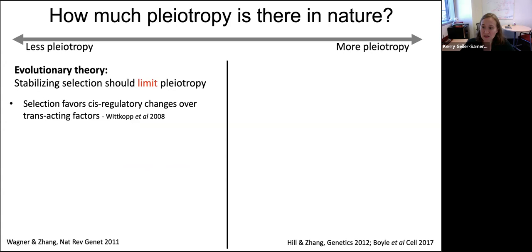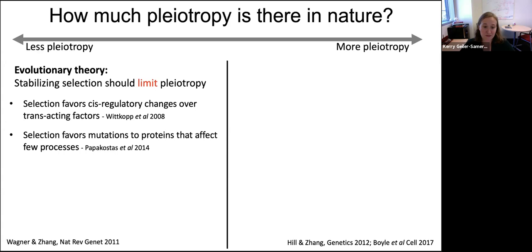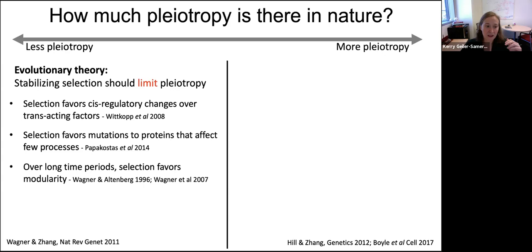There are plenty of examples in the literature demonstrating this cost by showing that selection tends to choose less pleiotropic over more pleiotropic changes. A paper from Patricia Whitcock shows natural selection tends to choose cis-regulatory changes affecting single genes over trans-regulatory changes affecting many genes. A paper from Erica Letter's group shows that changes helping fish adapt to temperature tend to be in low-pleiotropy genes. Over long evolutionary time, this encourages a modular structure in the genotype-phenotype map.